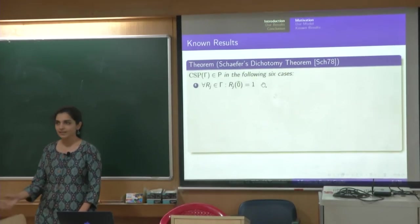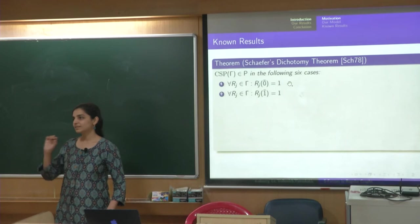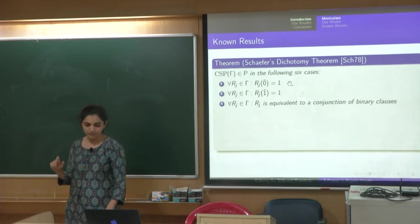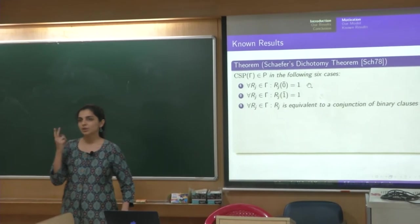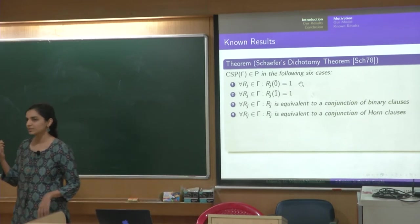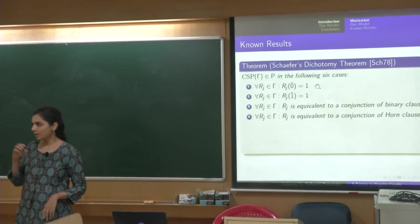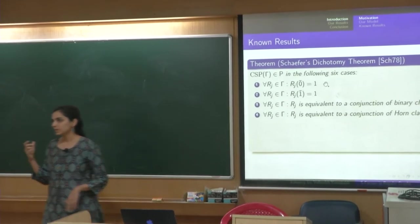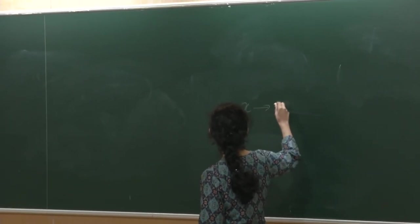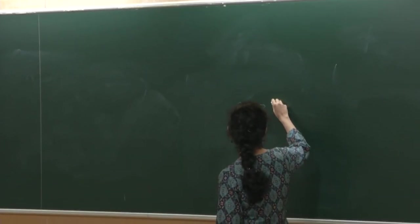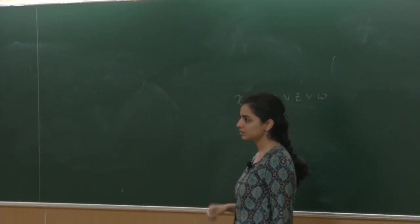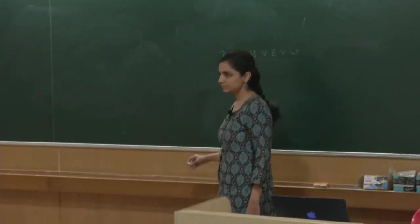So, what it says is that it gives 6 cases, in those 6 cases if gamma satisfy those 6, any of one of these 6 properties then CSP gamma is in P, in all other situations it is NP-hard. So, it is a dichotomy result. So, the 6 cases are very easy to state, either when all things are set to 0, it evaluates to 1, when all the variables are set to 1, it evaluates to 1. So, basically constant, RJs are binary, each clause is just a binary clause or it is a conjunction of horn clauses.